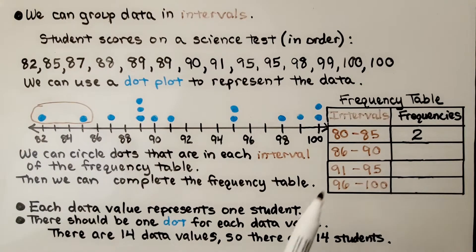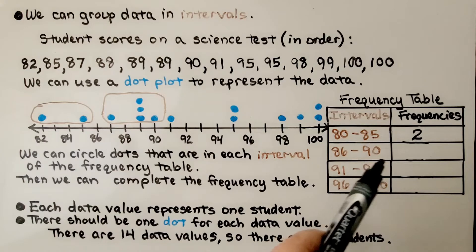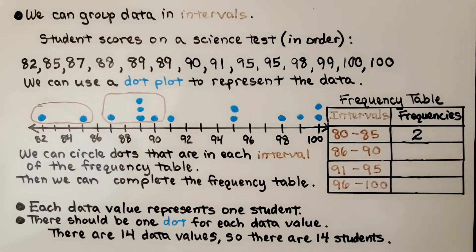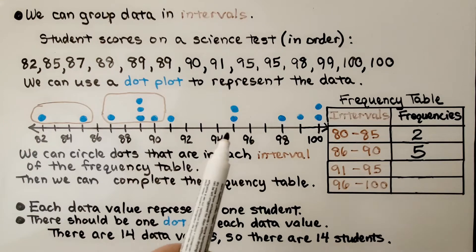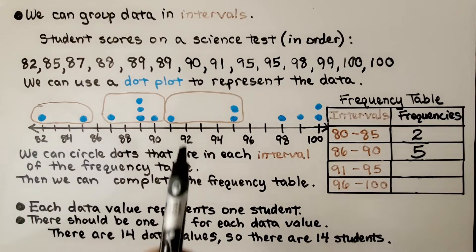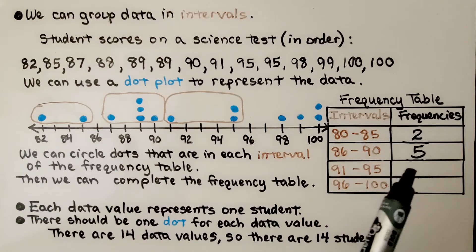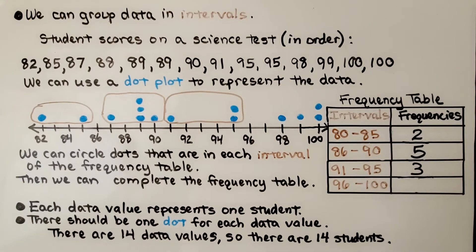The next interval is from 86 to 90. We circle those. In that interval, there's 5, so we write that for the frequency. The next interval is from 91 to 95. We circle those. There's 3 in that interval. We put that in the table. For the last interval, we have 96 to 100. We circle those. There's 4 in that interval. We write that in our table.